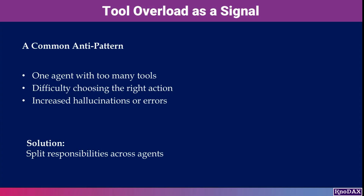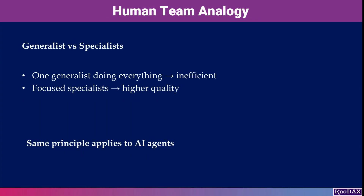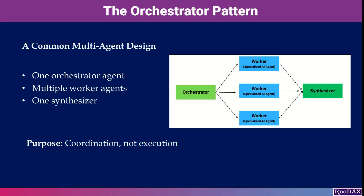One common signal is tool overload — when a single agent has access to too many tools, it may struggle to choose the right one or lose focus due to context window constraints. This mirrors how human teams work: a team of specialists almost always outperforms a single generalist trying to do everything. The same principle applies when designing AI agents.